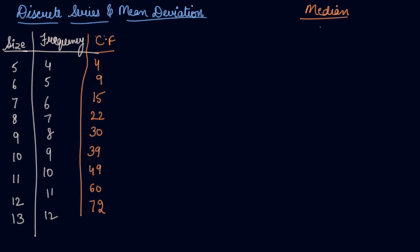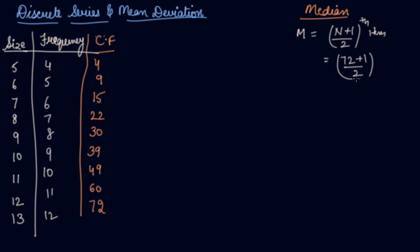Now you find out the median using the formula (N+1)/2 th item. So N is 72, giving 72 plus 1 divided by 2, which equals the 36.5th item. Which cumulative frequency contains 36.5? That is the 39 one. So 10 is your median.